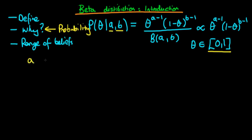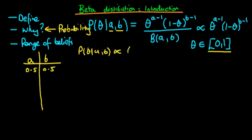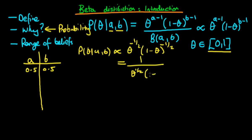Let's go through and look at how this function changes as we change a and b. Starting with the circumstance where a is a half and b is also a half. In that circumstance, the probability of theta given a and b is proportional to theta to the power minus a half times one minus theta to the power minus a half, which is the same as one over theta to the power a half times one minus theta to the power a half. We can see that if theta equals zero, we have one divided by zero — so there's an asymptote at theta equals zero. And if theta equals one, this second term equals zero, so we also have an asymptote there. So drawing this, the distribution is going to look like a U-shape with asymptotes at both ends.